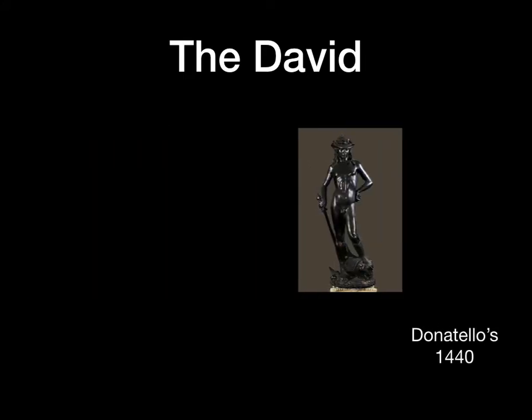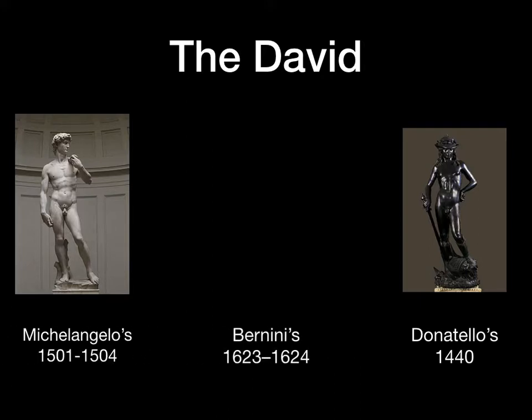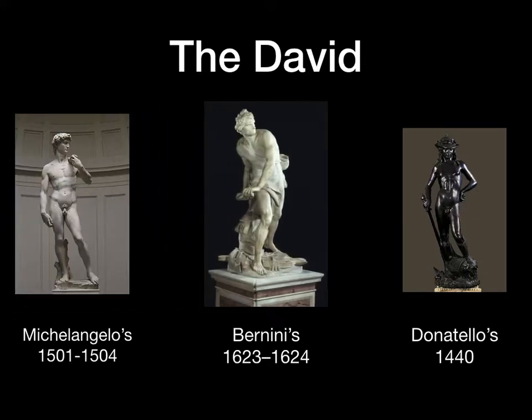To start off, let's do a comparison of the Davids. We're going to look at Donatello's David, Michelangelo's David, and the new artist we're going to look at — Bernini — and his David. What I have here is them set up in the order of the story being told. The first thing to notice is that they're all in different moments: Michelangelo's is the beginning, Bernini's is the middle, and Donatello's is the end.